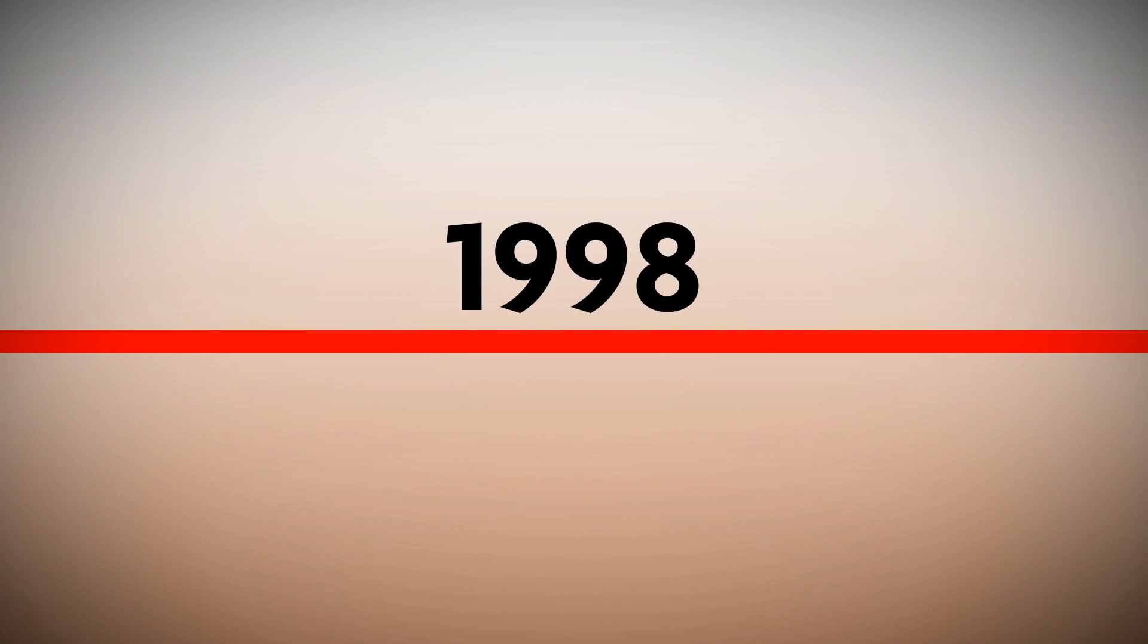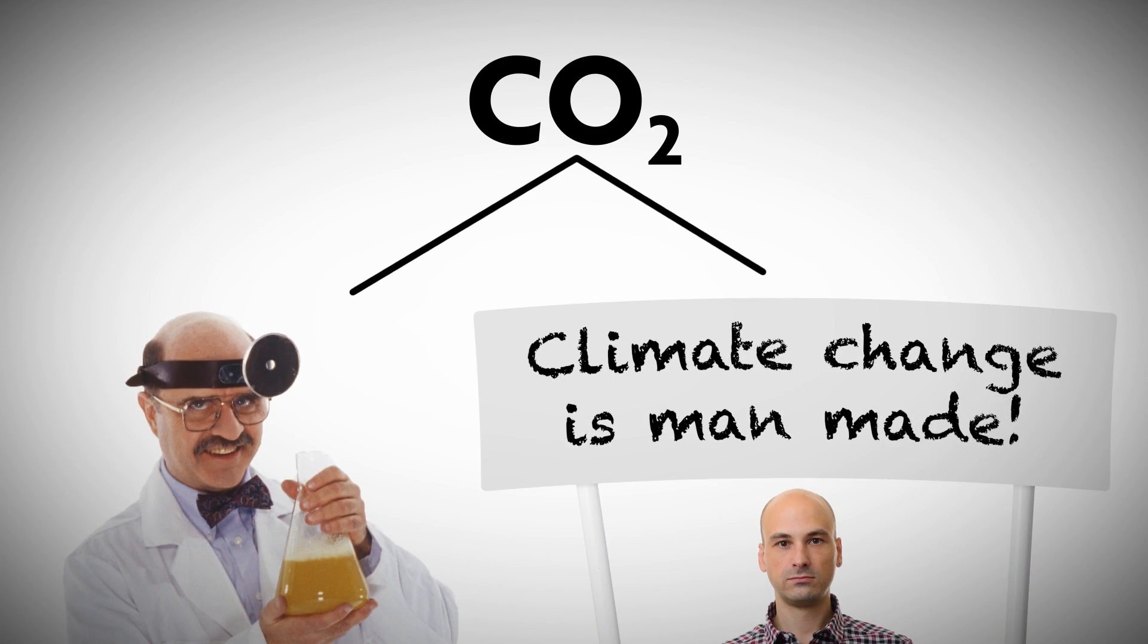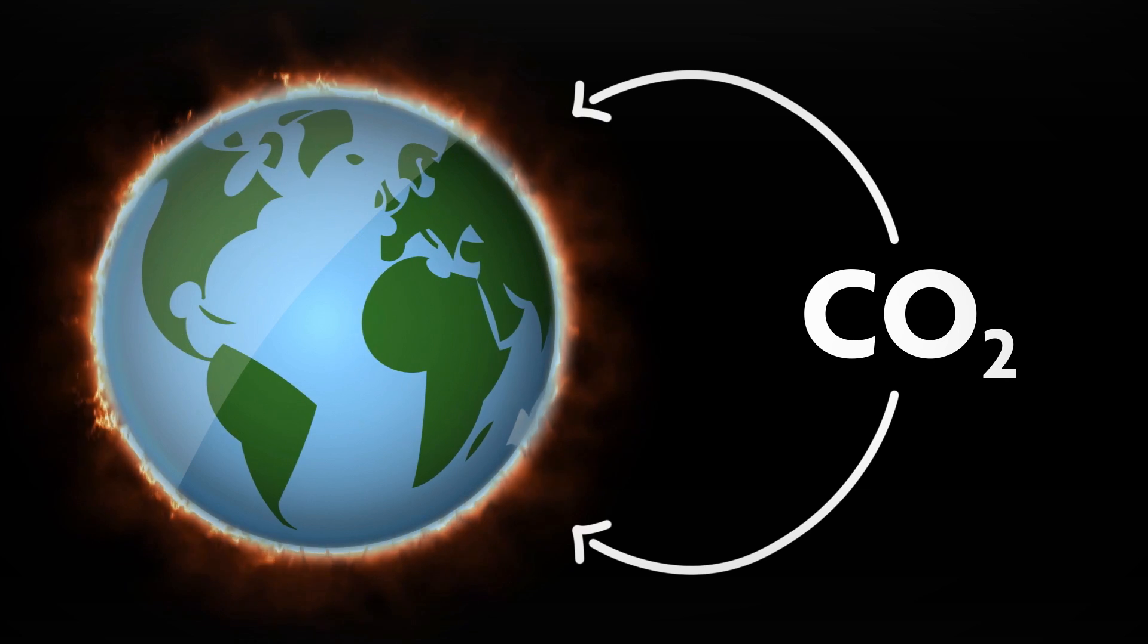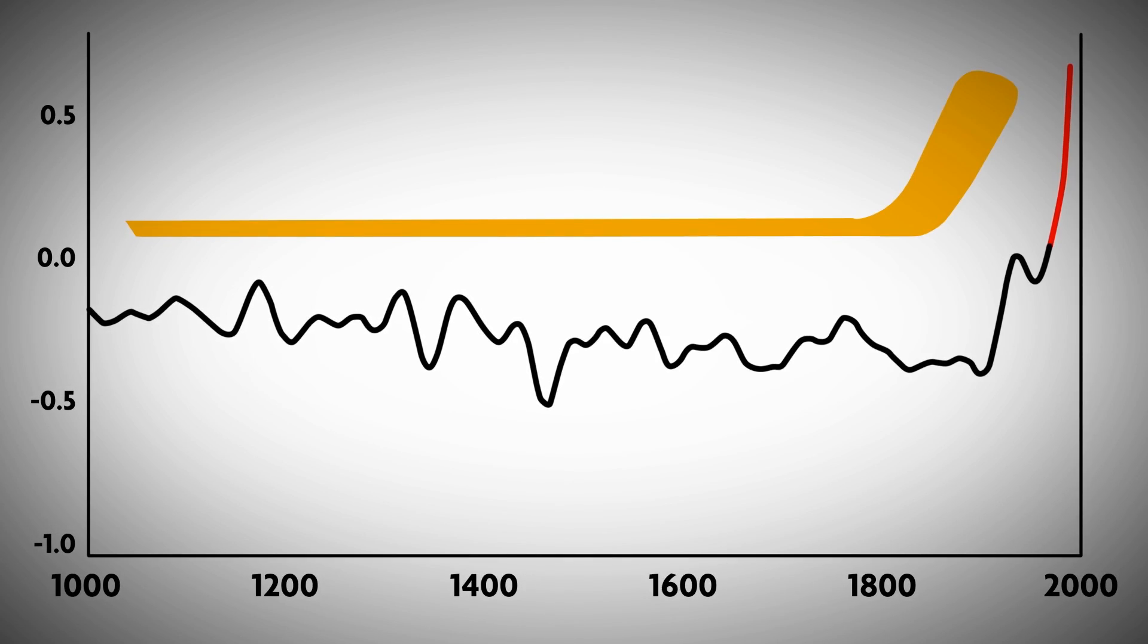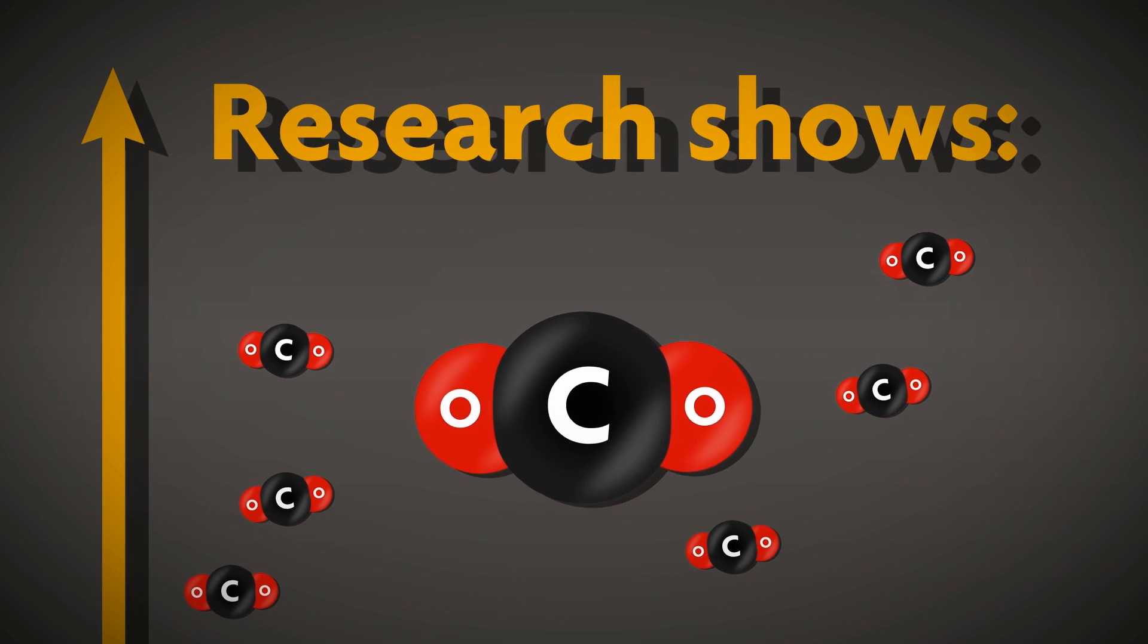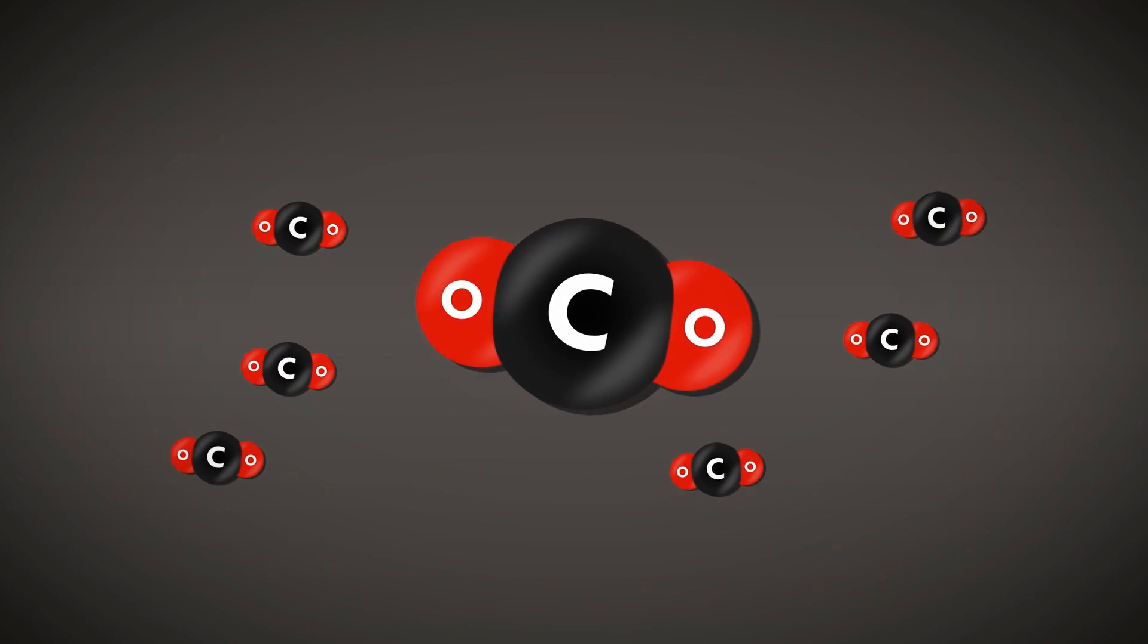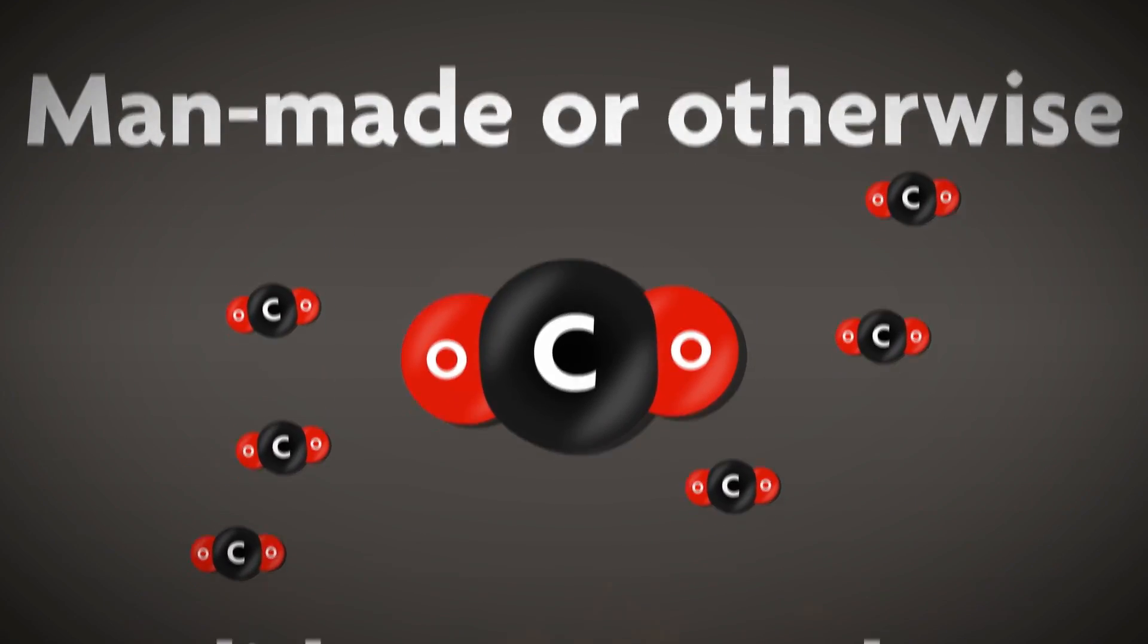Some scientists and many activists claim that humans produce carbon dioxide which causes global warming. They often point to the famous hockey stick diagram used in the 90s to supposedly prove their point. But research shows that the rise in CO2 actually happened after the Earth's temperature started rising. That means CO2, man-made or otherwise, did not cause the warming after all.